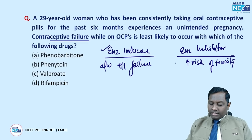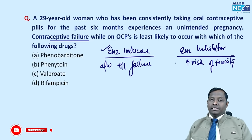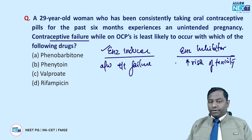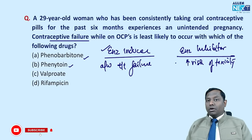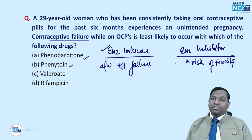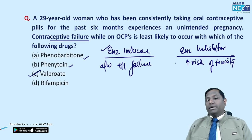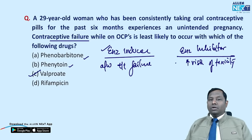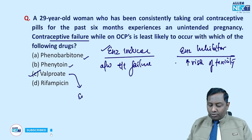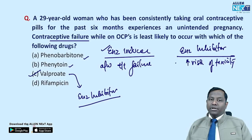Contraceptive failure is most likely with enzyme inducers. The mnemonic 'PEACOCK' helps remember enzyme inhibitors: P = protease inhibitors, E = erythromycin, A = amiodarone, C = cimetidine, O = omeprazole, C = ciprofloxacin, K = ketoconazole, and W = valproate. Valproate is a very potent enzyme inhibitor, so all other anti-epileptic drugs are enzyme inducers. Enzyme inhibitors increase risk of toxicity rather than treatment failure.